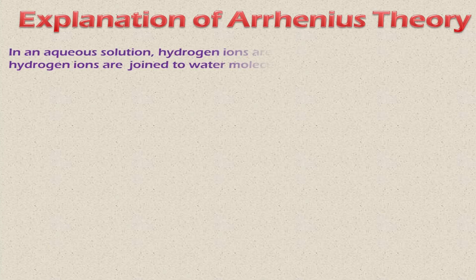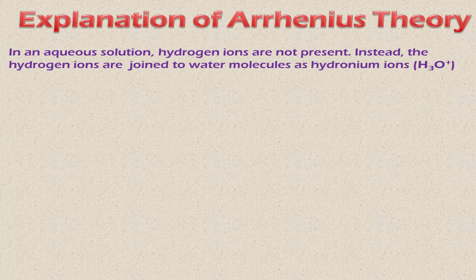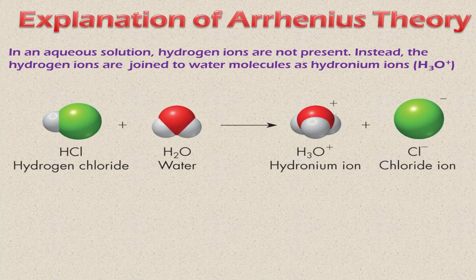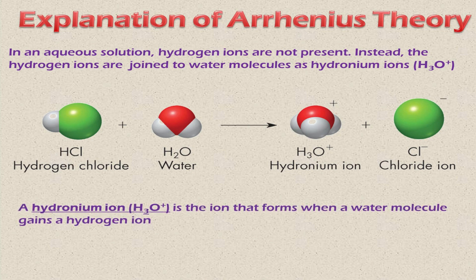Now, some explanation of Arrhenius theory: in an aqueous solution, hydrogen ions are not present as free H⁺; instead, they join water molecules as hydronium ions H₃O⁺. For example, HCl dissolved in water does not release a free H⁺ ion but instead releases hydronium ions. A hydronium ion is the ion that forms when a water molecule gains a hydrogen ion. So the hydrogen ion is transferred from HCl to water, and therefore H₃O⁺ is produced in water.